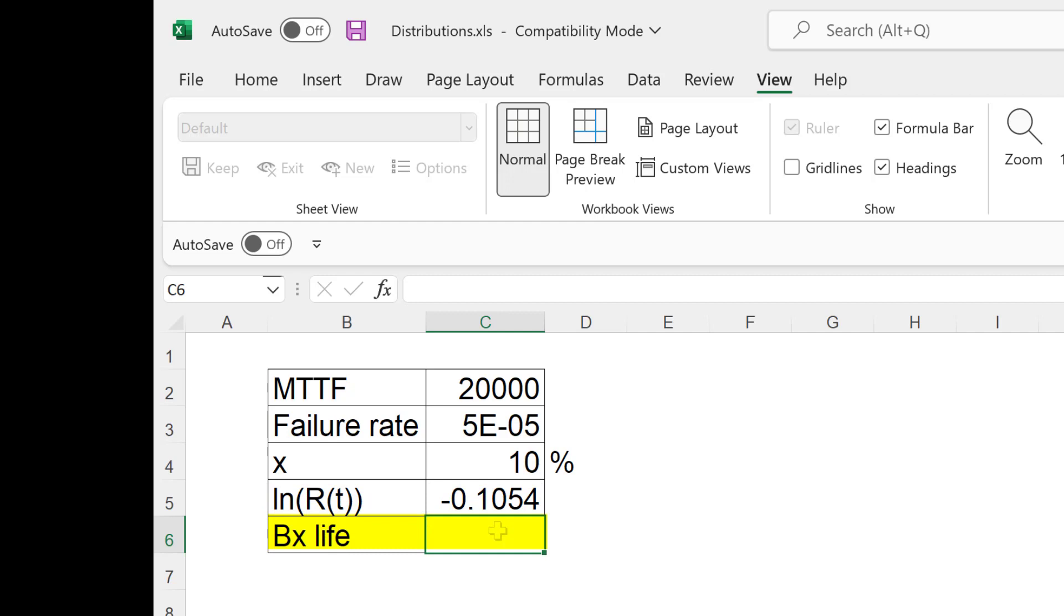The B10 life therefore will be equal to MTTF theta times ln, but we will have to put a minus sign. So that gives us a value of 2107 hours, which is same as what we calculated earlier.